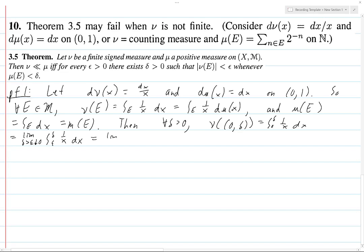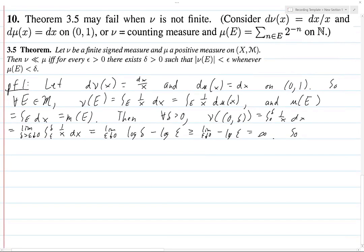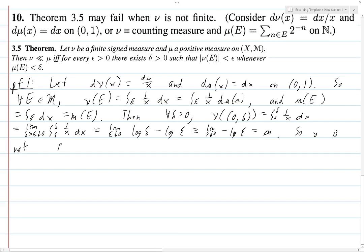that's just limit as epsilon goes down to 0 of, let's see here, log delta minus log epsilon, this is of course natural log, I just write it as log, that's just, well, this part is going to drop out if we do the greater than or equal to sign, so log epsilon, and this goes down to minus infinity, and so this is positive infinity, and so, ν is not finite, there we go.